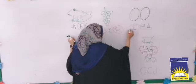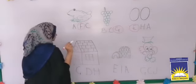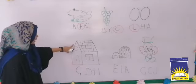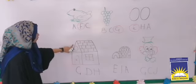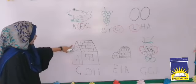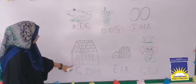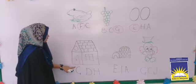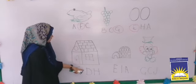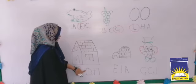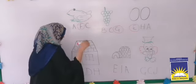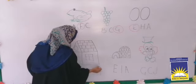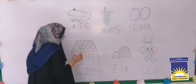Then we have to circle it. What is this? House. What is the first letter of house? Can G start with house? G for house? No. D for house? No, that's wrong. H for house? Yes, H for house!